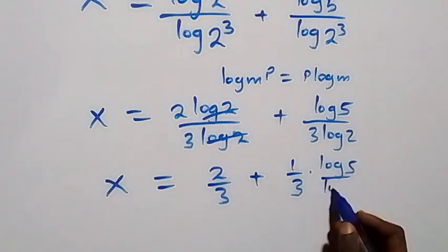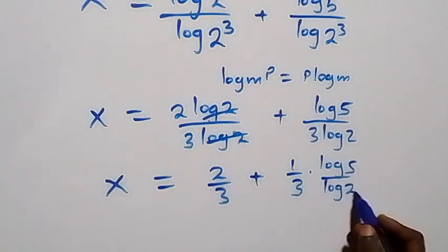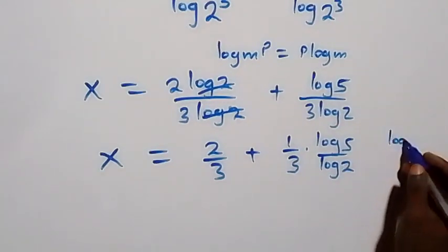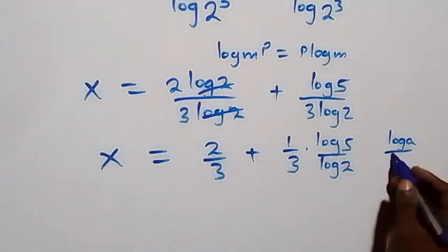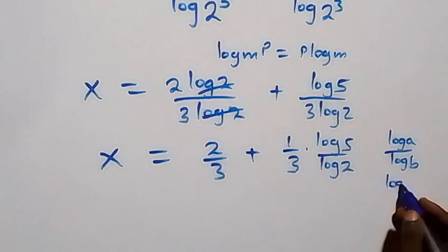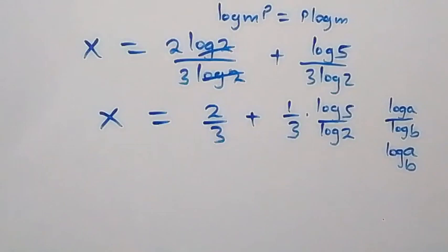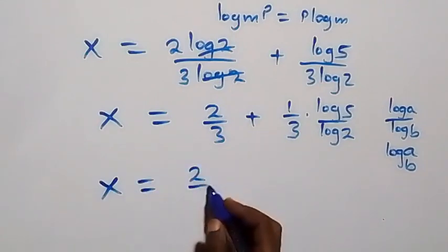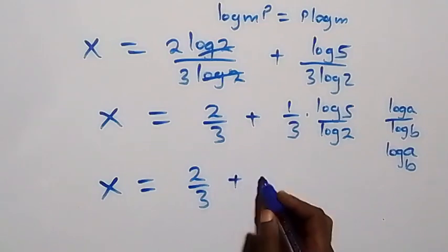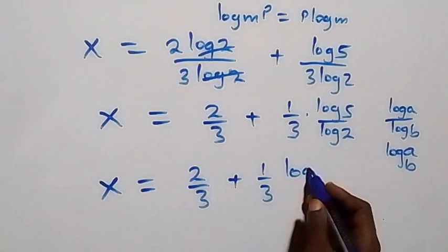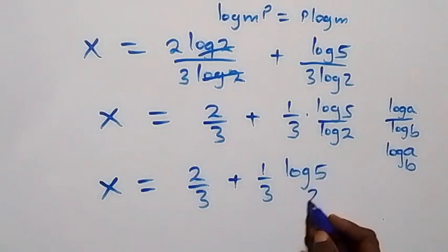From the change of base formula, log a over log b is the same as log a to base b. So here we have x equals to 2 over 3 plus 1 over 3 times log 5 to base 2.